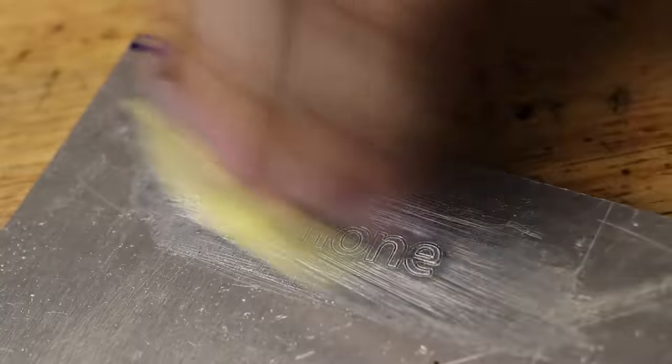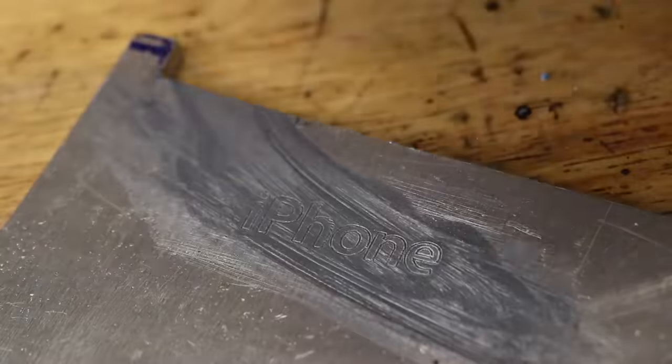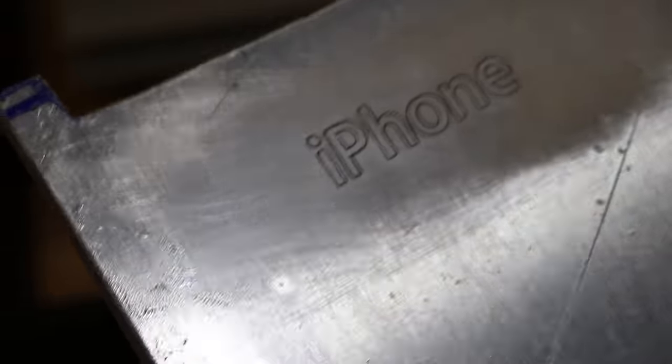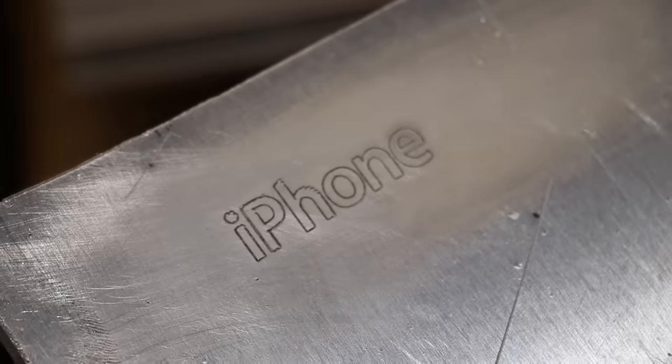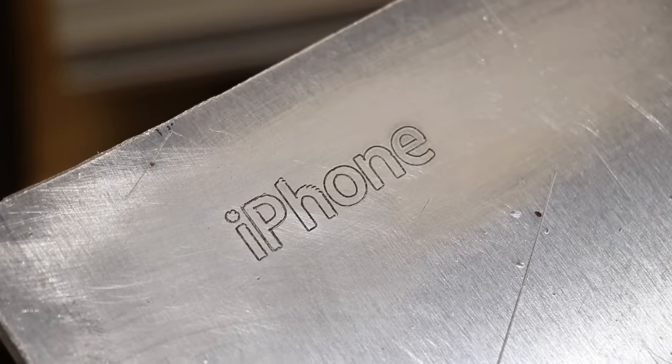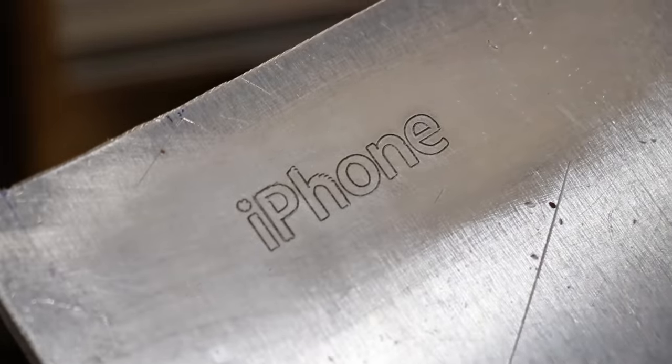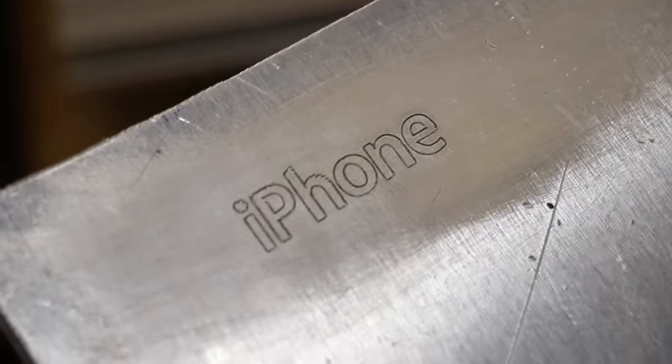The cutter left a bit of a burr which I'll sand down. To be fair to the mill, this grade of aluminum is not the nicest alloy to machine. With it cleaned up it actually looks a lot better than I thought it would. There are some parts that turned out better than others, but I was expecting it to look a lot worse. I don't know, I'm kind of impressed.